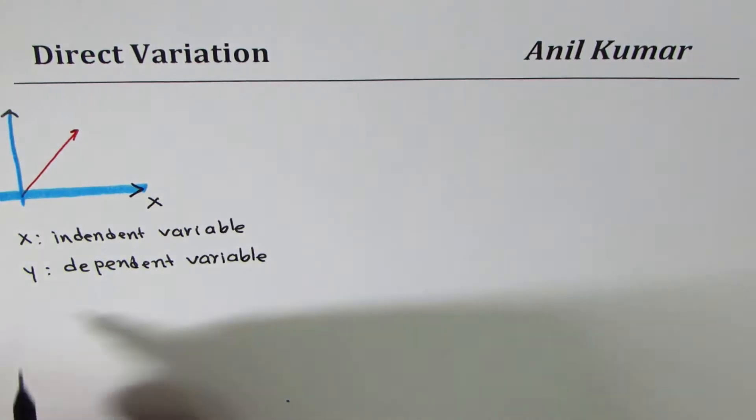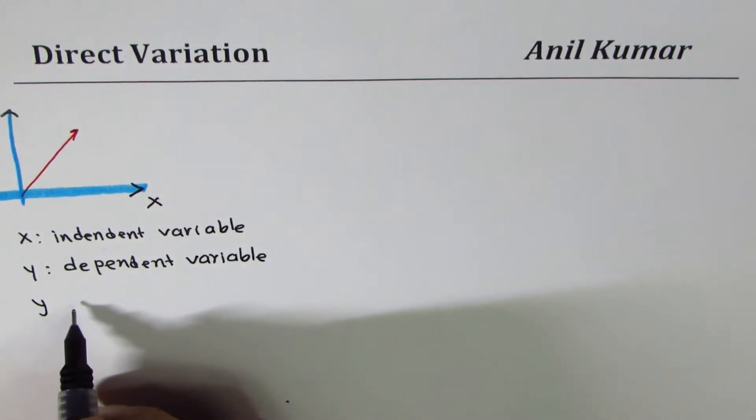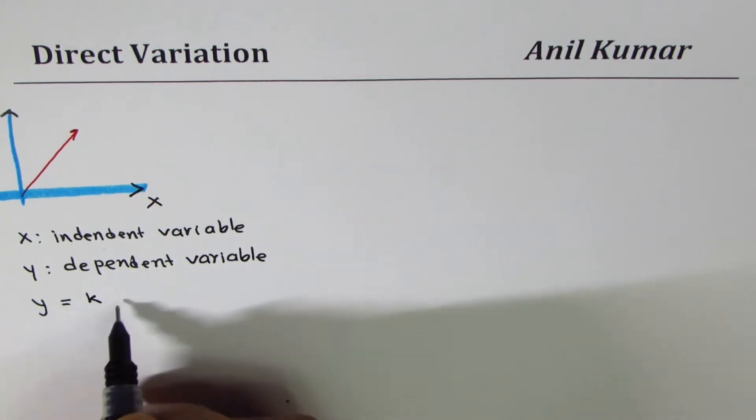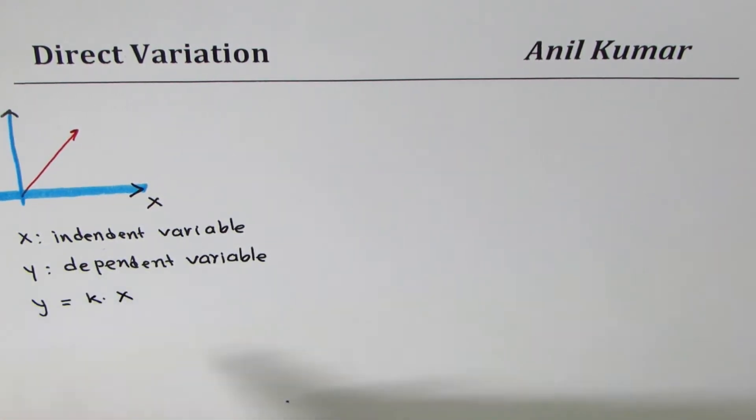Whenever we're talking about direct variations we say y equals some constant times x. That is to say that the ratio y over x is always constant.